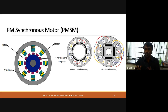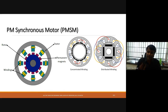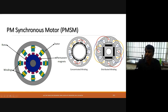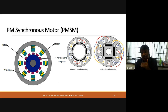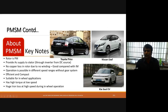The permanent magnet synchronous motor is similar to the brushless DC motor — the rotor is a permanent magnet in both. The key difference is the stator winding type: in the brushless DC motor the stator has concentrated winding, producing a trapezoidal back-EMF, whereas in the permanent magnet synchronous motor the stator has distributed winding, producing a pure sinusoidal back-EMF.